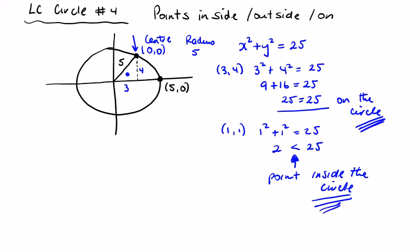Now pick an obvious point that's outside the circle. We can put the point (6,1). Let's see what happens now. We're going to have 6² + 1² = 25. 36 + 1 = 37 is greater than 25.